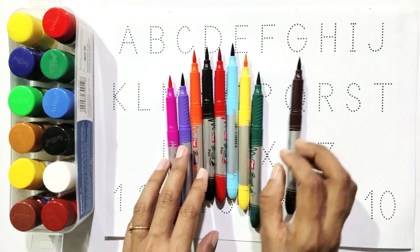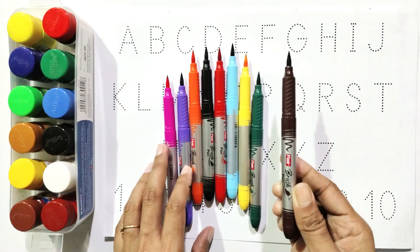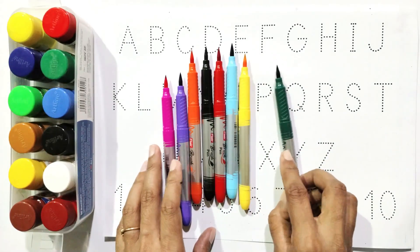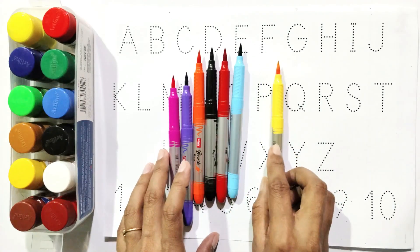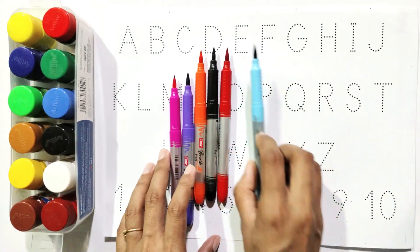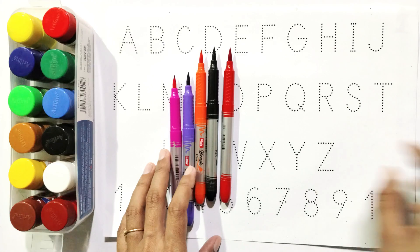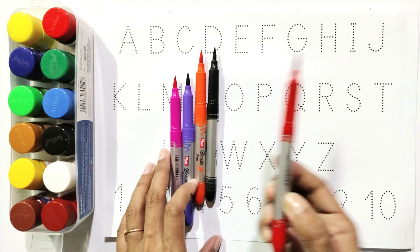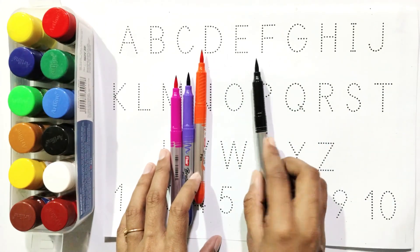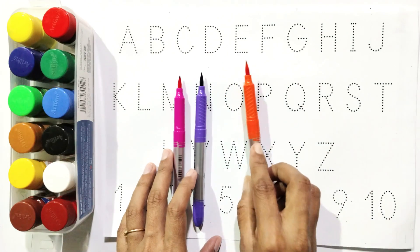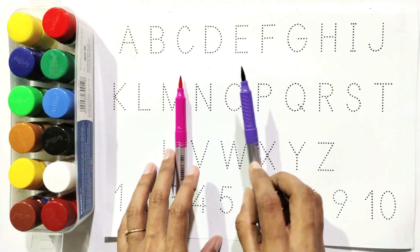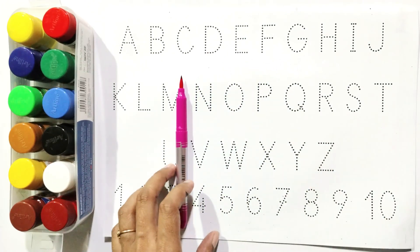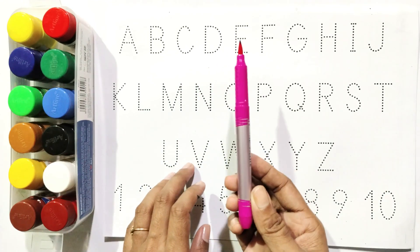Say with me, colors name: brown, green, yellow, sky blue, red, black, orange, purple, pink.